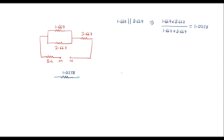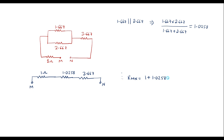This 1.0258 ohm resistor comes in series with 3.667 ohm, and 1 ohm connected to terminal M. Therefore, the equivalent resistance between M and N is R_MN = 1 + 1.0258 + 3.667 = 5.692 ohm. This is the equivalent resistance between terminals M and N.